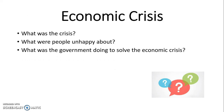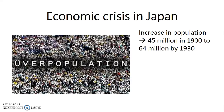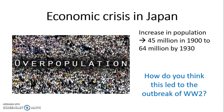Let's first look at the economic crisis. When we study the economic crisis, we have to think about what the crisis was, what people were unhappy about, and what the government was doing to solve it. There was a huge increase in population in Japan, from 45 million in 1900 to 64 million by 1930 — a 20 million jump in population within just 30 years.